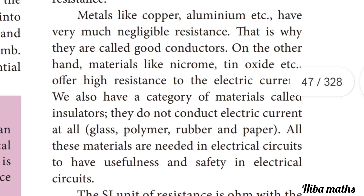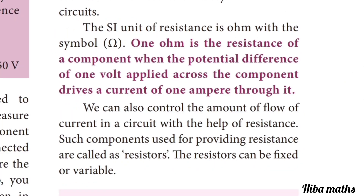We also have a category of materials called insulators, which do not allow electric current to flow. For example, glass, polymer, rubber, and paper are all insulators. These materials are needed in electrical circuits for safety. The SI unit of resistance is Ohm (Ω). One Ohm is the resistance of a component when a potential difference of one Volt applied across it drives a current of one Ampere through it.